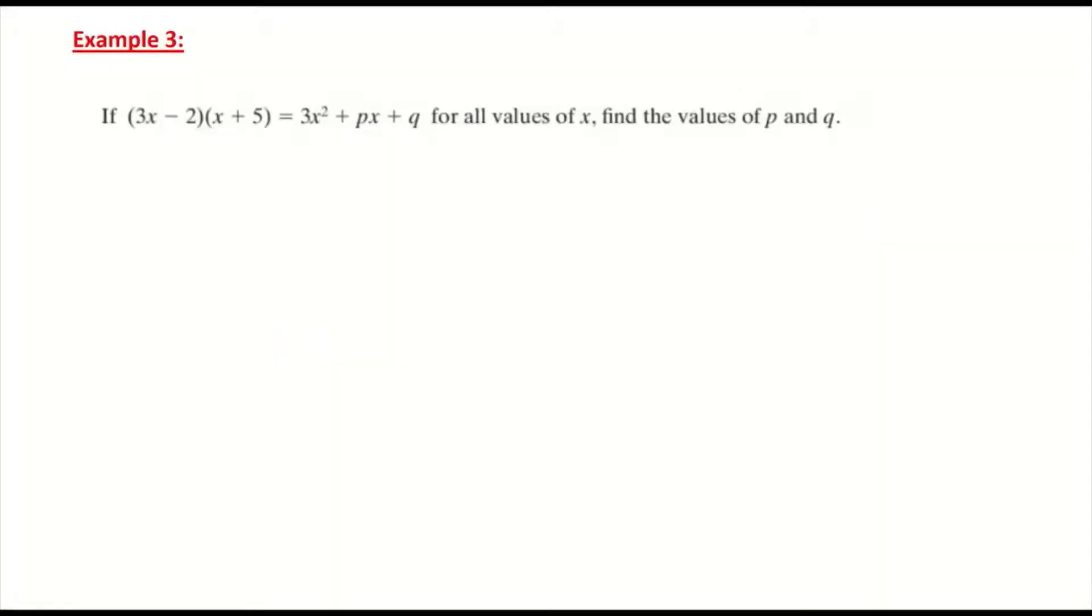They're telling us that these are equal. You have this equal sign showing that (3x - 2)(x + 5) is equal to 3x² + px + q. And they're trying to get us, which is important, all the values for x. So they're telling us that values exist for p and q.